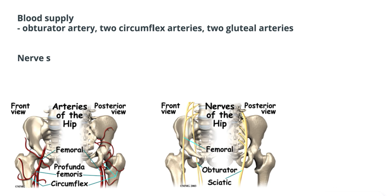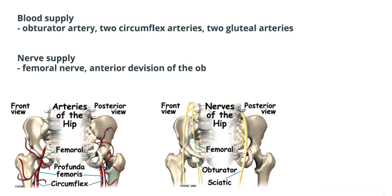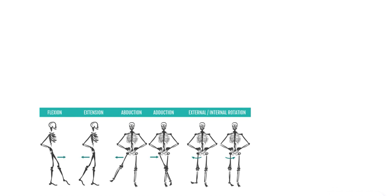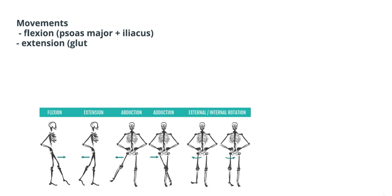The innervation to the hip joint is mainly from the femoral nerve, the anterior division of the obturator nerve, the nerve to the quadratus femoris muscle, and the superior gluteal nerve.